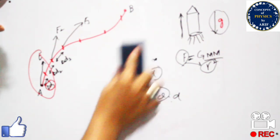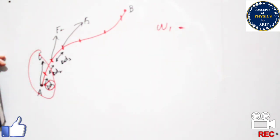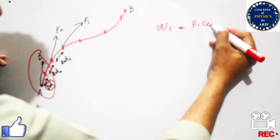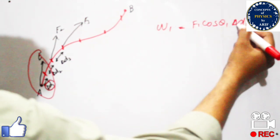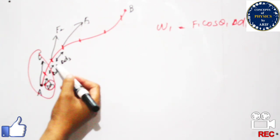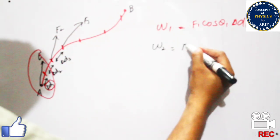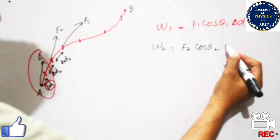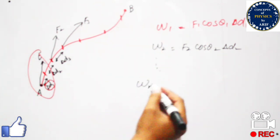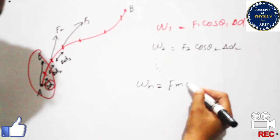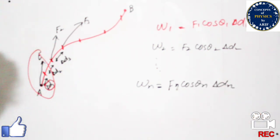When we want to find the total work done in the region from A to B, in case one: W₁ = F₁·cosθ₁·Δd₁, because it is a small interval delta d. In case two, similarly, the work on region two is W₂ = F₂·cosθ₂·Δd₂. In all cases, for the nth interval the work is Wn = Fn·cosθn·Δdn.